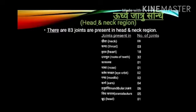Urdhvajatra Sandhi — joints in the head and neck region: there are 83 joints present. That is: Griva — 8; Kantha — 3; Urudaya — 18; Dantamula — 32; Kakalaka — 1; Nasa — 1; Vartana Mandala — 2; Ganda — 2; Karna — 4; Hanusandhi (mandibular joint) — 6.